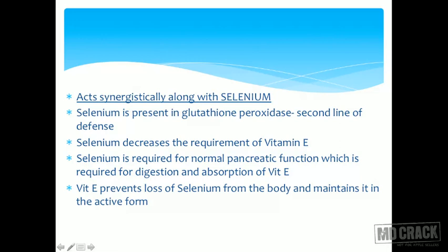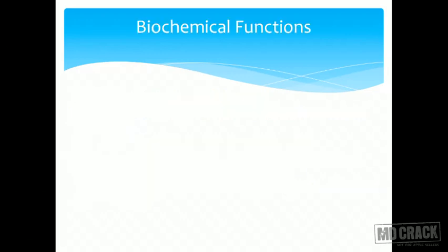Selenium plays a dual role in Vitamin E metabolism: it aids in digestion and absorption, and it decreases the requirement for Vitamin E by being present in glutathione peroxidase. In return, Vitamin E prevents loss of selenium from the body and maintains it in its active form. So it is a two-way relationship — selenium helps Vitamin E and Vitamin E helps selenium.